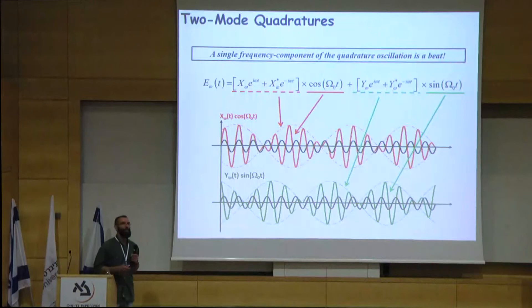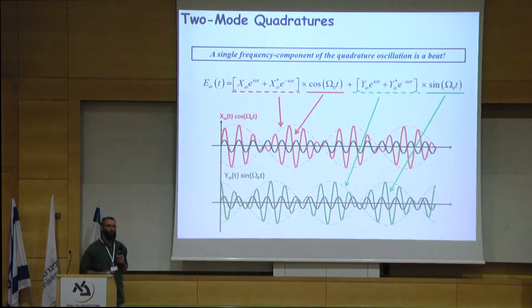The frequency of the beat envelope can easily be of optical frequency, making it impossible to detect using photodetectors — simply too fast.